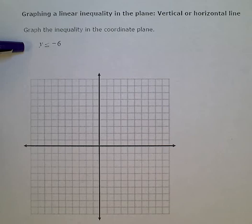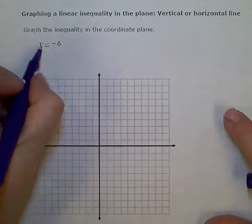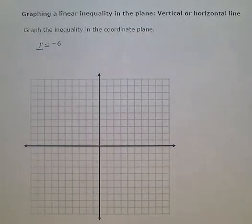Now since I only have one variable in this inequality, just a y, I know that this is going to be either a vertical or horizontal line. If I have two variables, x and y, in my inequality, it would be slanted. But one or the other, just x or just y, I'm going to be graphing a vertical or horizontal line in the coordinate plane.